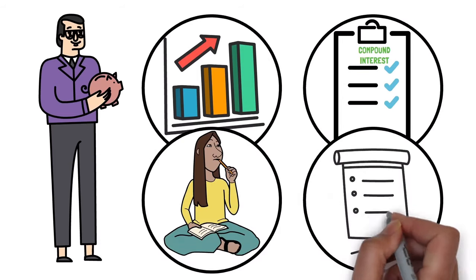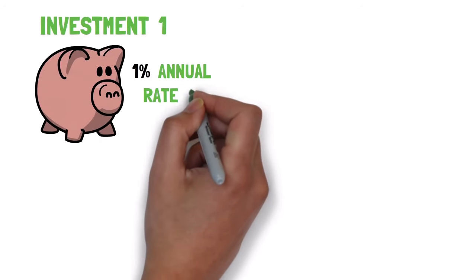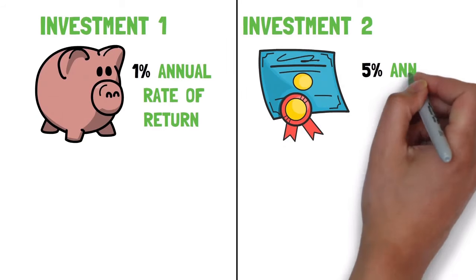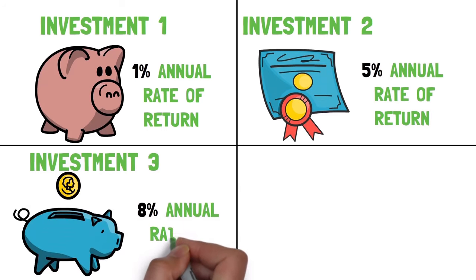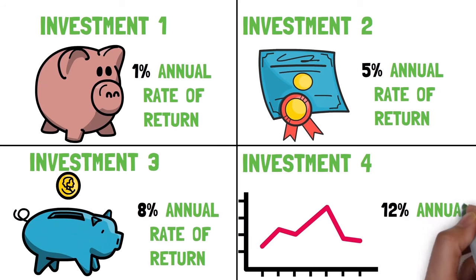For us to better understand this rule, let's look at these following scenarios. Investment number one: savings deposit at 1% annual rate of return. Investment number two: government bonds at 5% annual rate of return. Investment number three: mutual funds at 8% annual rate of return. Investment number four: stocks with a 12% annual return.